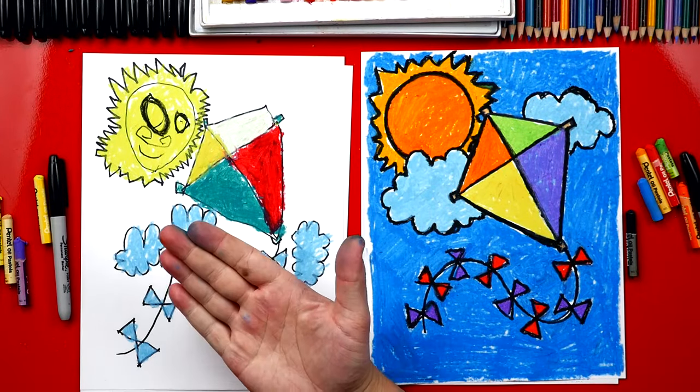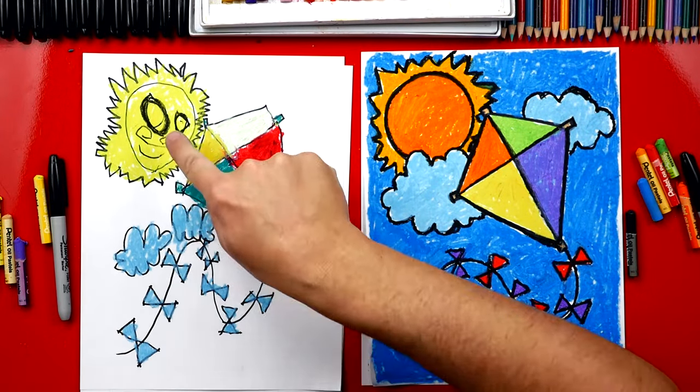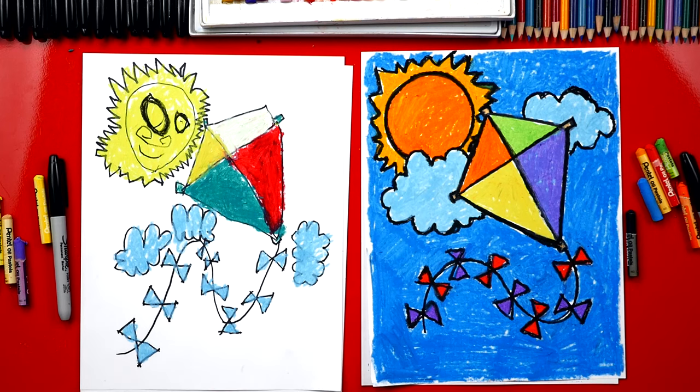All right, dude, we did it. We finished coloring our kites, and you did awesome. I love this little sun up there with the funny face. And I also love your clouds, and you used different colors to color your kite.